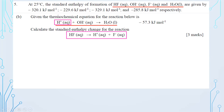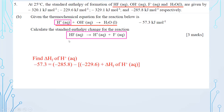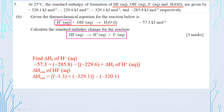Use enthalpy change of products minus reactants: −57.3 equals H₂O minus OH⁻ and H⁺. OH⁻ is −229.6, so you get H⁺ = +1.3. After getting 1.3, add −329.1 and subtract −320.1 to get the final answer of −10.3 kJ/mol for the dissociation of HF.